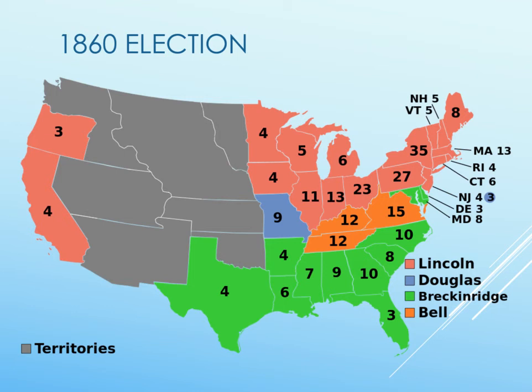A very centrist type of person, as you can probably tell by looking at the map. The Republicans nominate Lincoln. He's actually one of their more moderate choices, not the firebrands that you had before. But what it winds up really being is it's Lincoln versus Douglas in the North, and it's Breckinridge, Bell, and Douglas in the South. Douglas is the only person foolish enough to actually campaign in the entire country, seeing how divided it is. Lincoln's name does not even appear on the ballots of 10 different states.